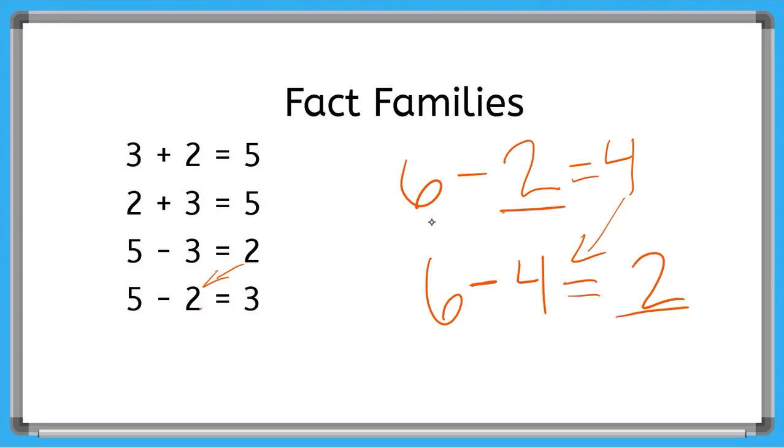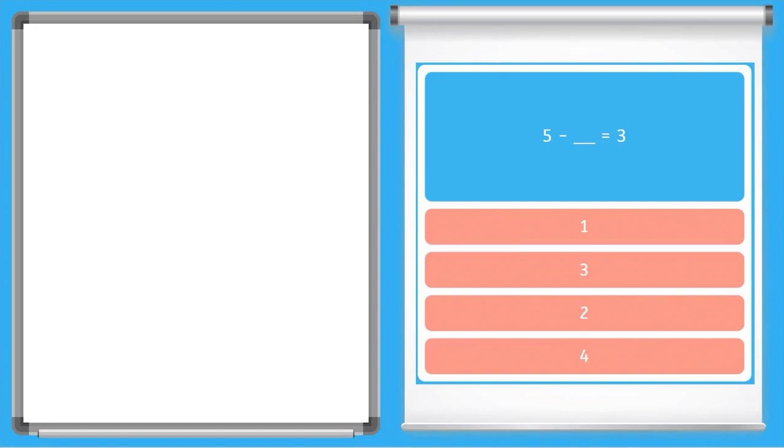Let's try this with some of our problems from the game. See here, I have 5 minus a number equals 3. So if I just move that 3 over, then I will get the other problem in our fact family, and this will help us find the unknown number. Let's say I have 5 and I take away 3. What do I get? 5 minus 3 equals 2. And there is our answer.